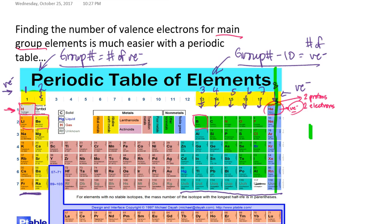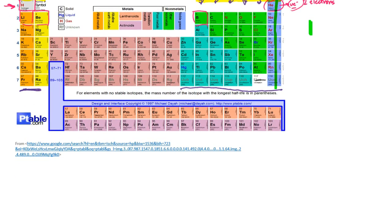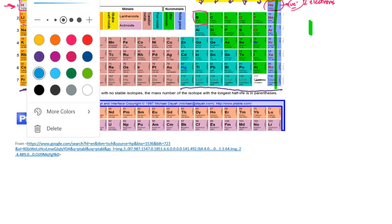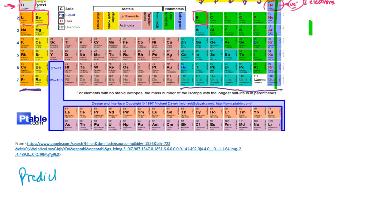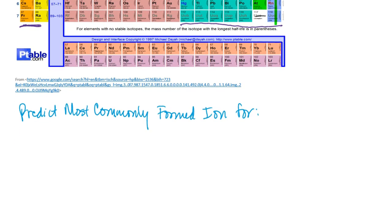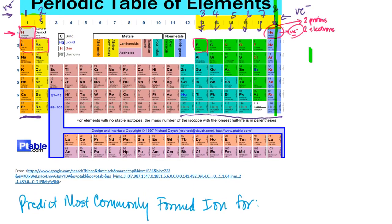Let's apply that by predicting the most commonly formed ion for a few elements. For our first example, let's take sodium. Sodium's closest noble gas is neon, which has 8 valence electrons. Sodium has 1 valence electron.